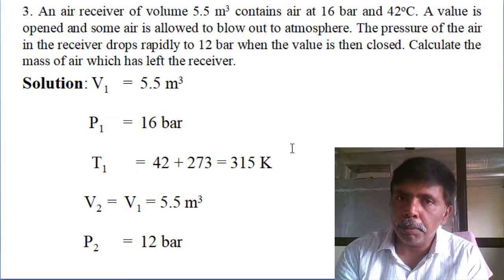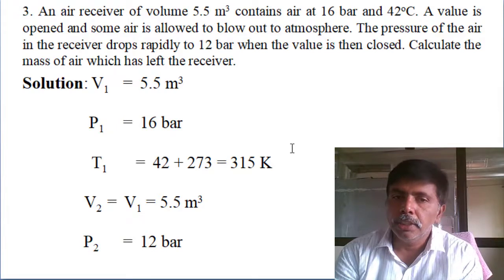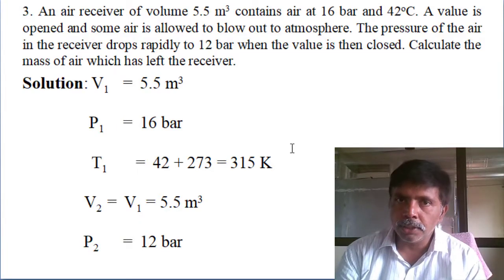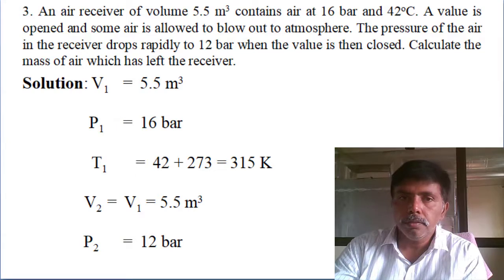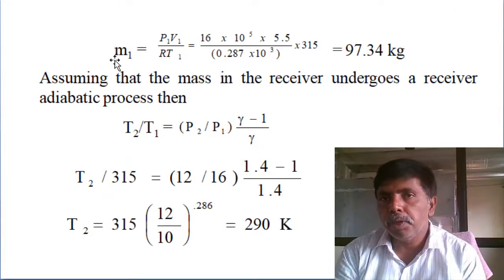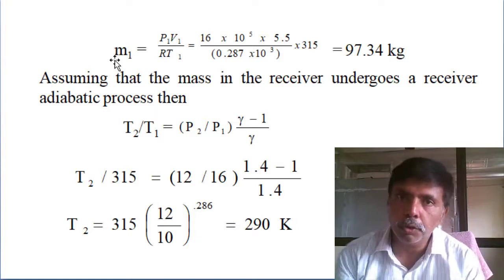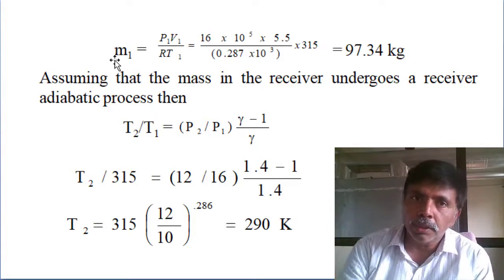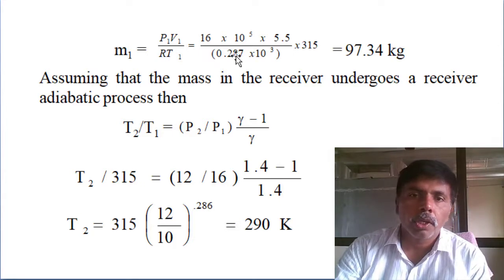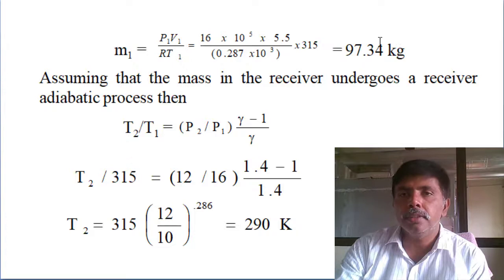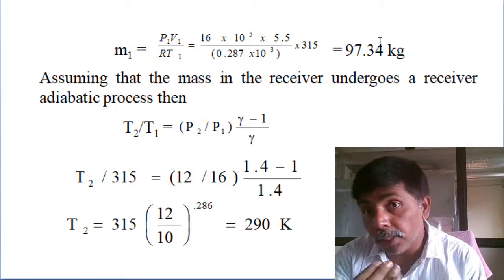Using the basic equation PV = mRT, the gas constant R for air = 8.314 / 28 = 0.287 kJ/(kg·K), where 28 is the molecular weight of air. Substituting these values gives the initial mass of air in the receiver at 16 bar.